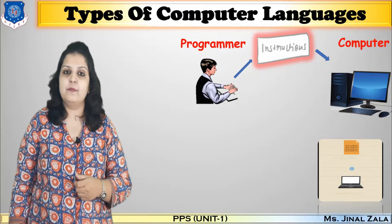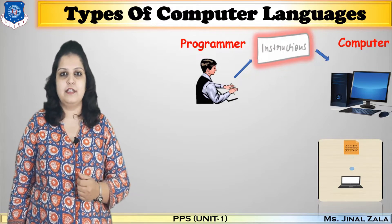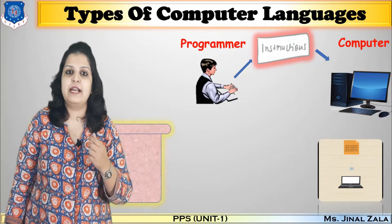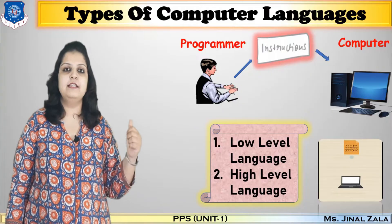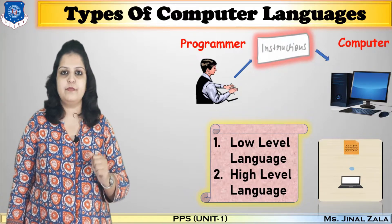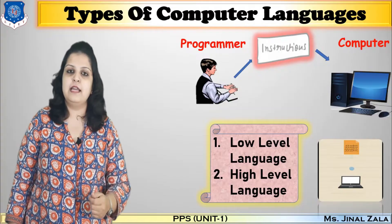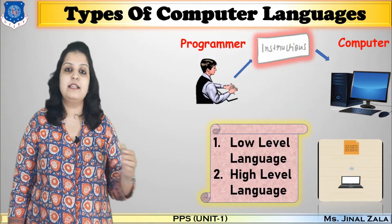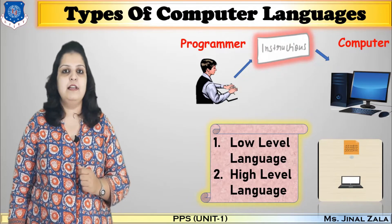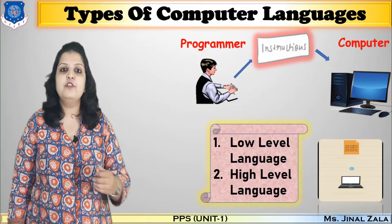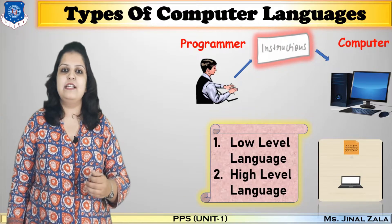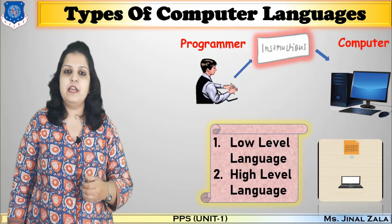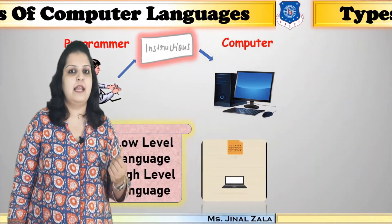We have many different types of computer languages, and these languages are mainly divided into two categories. The first category is low-level language and the second category is high-level language. Low-level language is understood by the machine, and high-level language is more user-friendly, or we can say it is closer to the human or programmer.